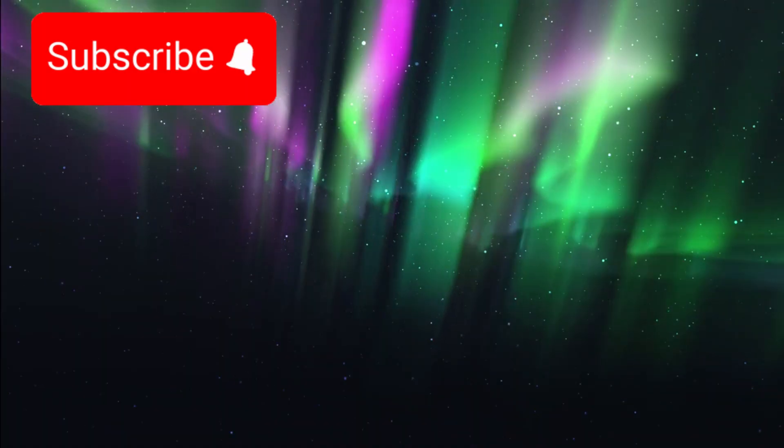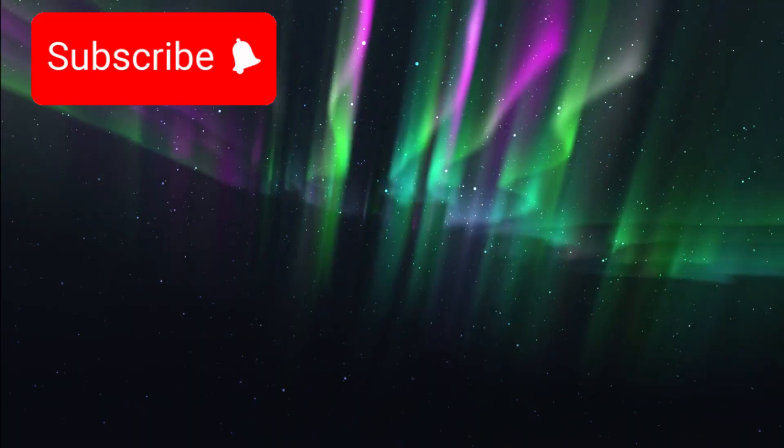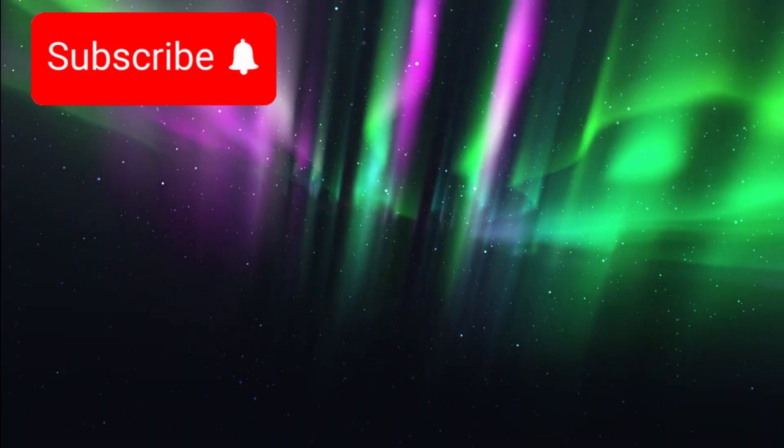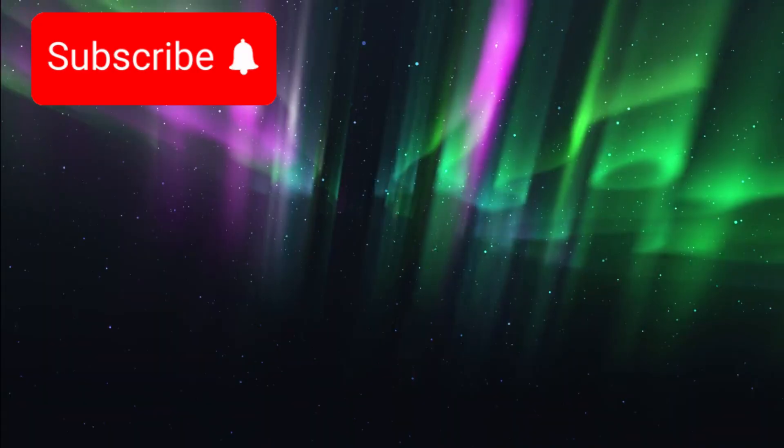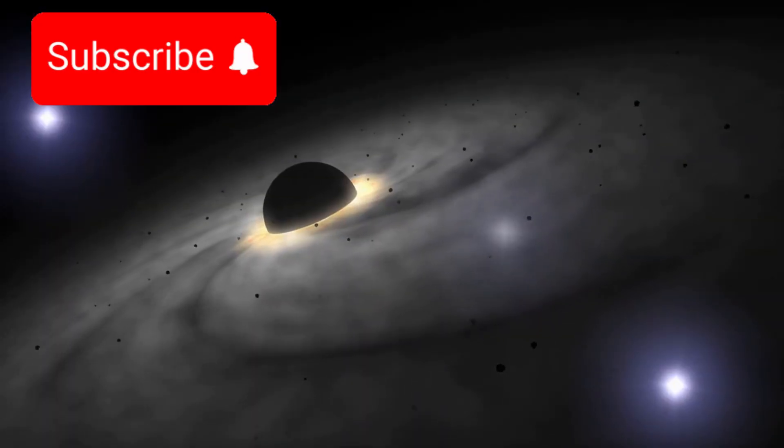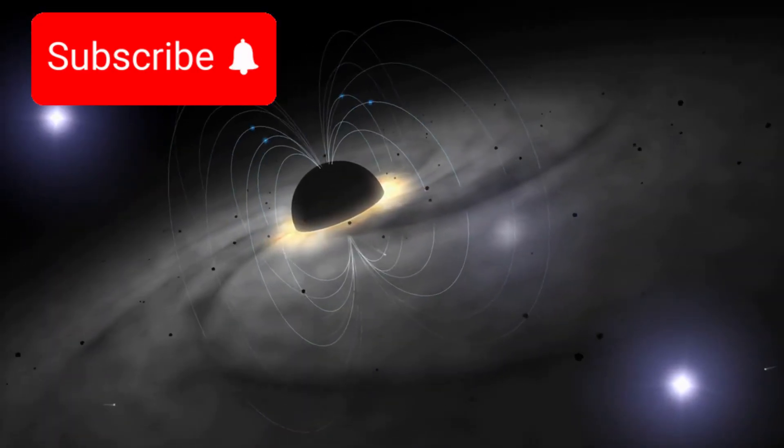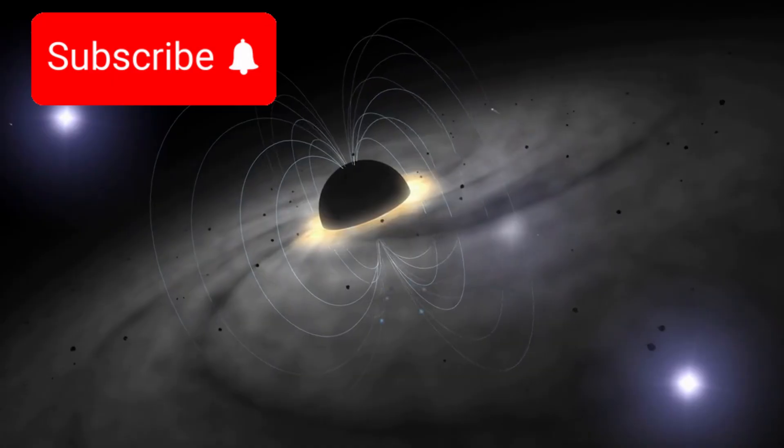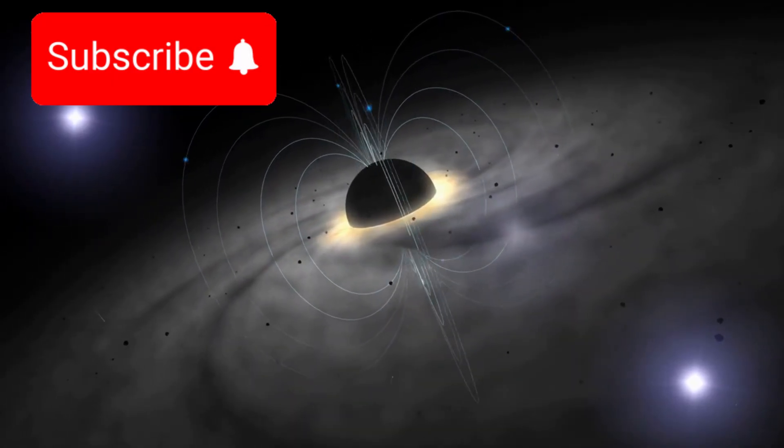It recorded a sharp rise in cosmic rays and a jump in plasma density, signs that it had exited the heliosphere and entered interstellar space. Surprisingly, the magnetic field didn't change direction as expected, hinting at a more complex and gradual boundary than once believed.